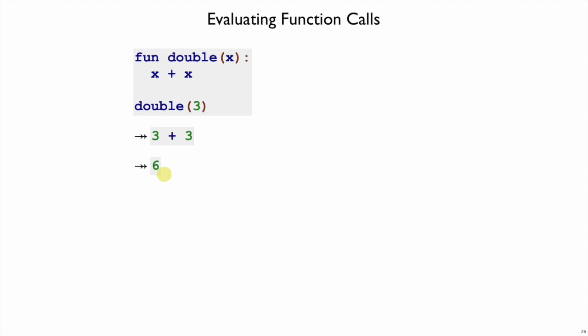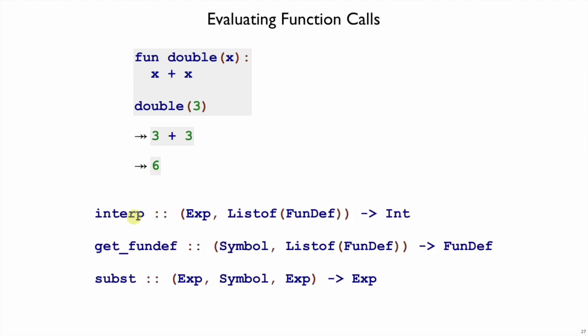So to follow this strategy, we need some new pieces to our interpreter. We need first to change our interpreter so in addition to an expression, it has a list of function definitions, and then it can still give us integers for the result.